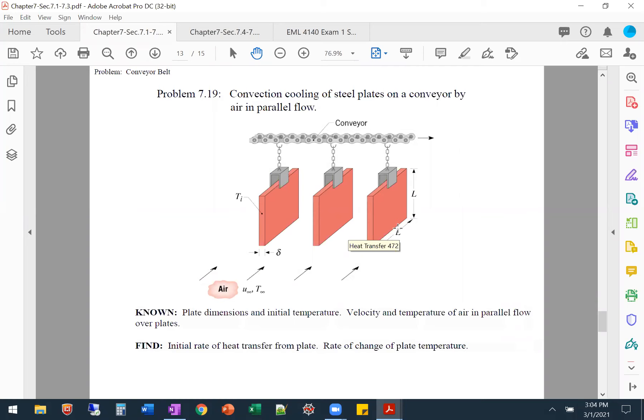Problem 7.19: steel AISI 1010 plates of thickness 6 millimeters and length of 1 meter on a side are conveyed from a heat treatment process and are concurrently cooled by atmospheric air of velocity U infinity equal to 10 meters per second and T infinity of 20 degrees Celsius in parallel flow over the plates. They show the schematic you see, and for an initial plate temperature of 300 degrees Celsius, what is the rate of heat transfer from the plate? What is the corresponding rate of change of the plate temperature? The velocity of the air is much larger than that of the plate.